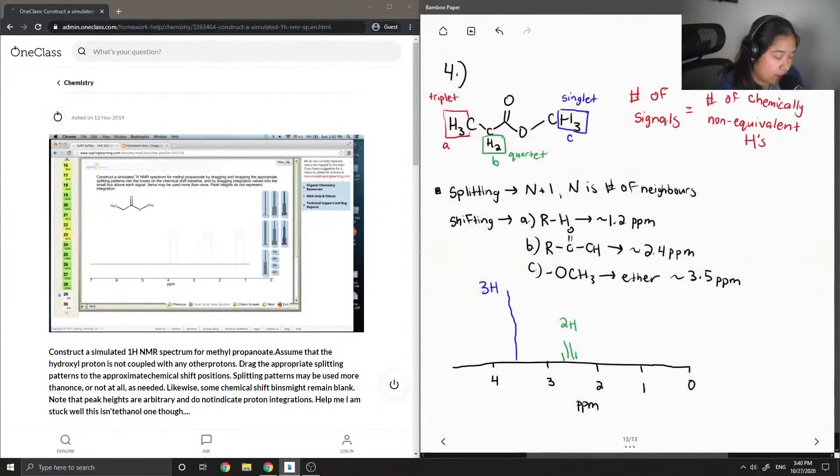And then lastly, for the hydrogens in A, it'll split as a triplet at around 1.2 ppm. So I'm just going to do a triplet there. And its integration is 3H.